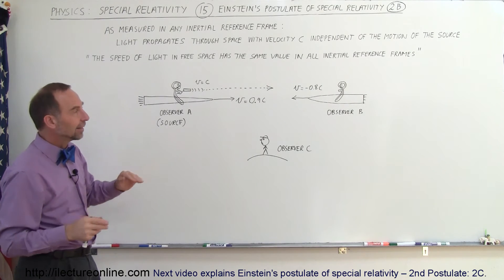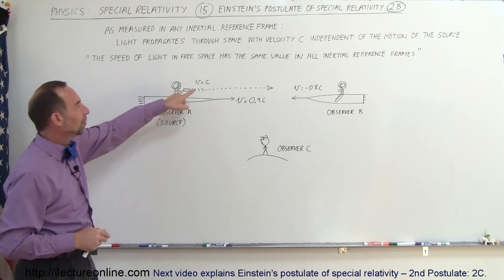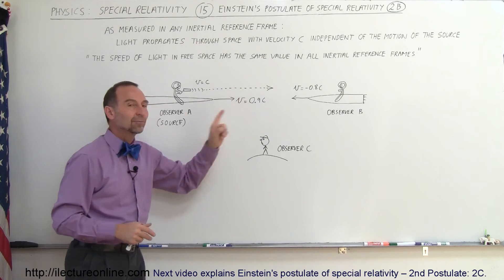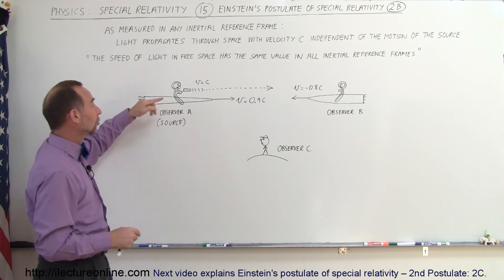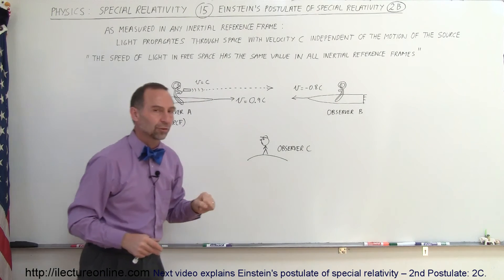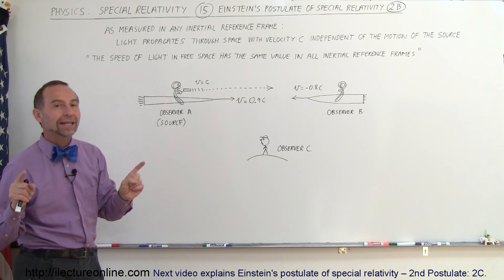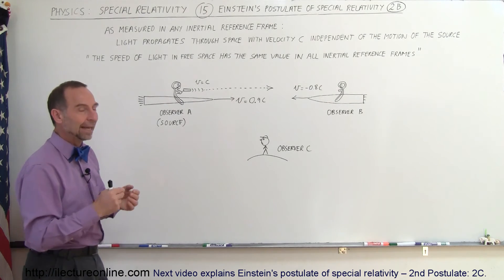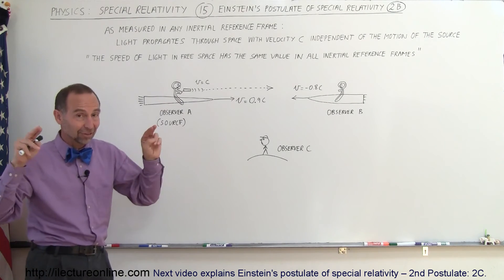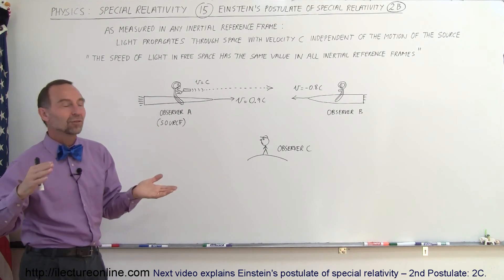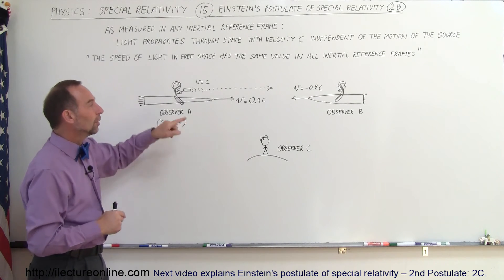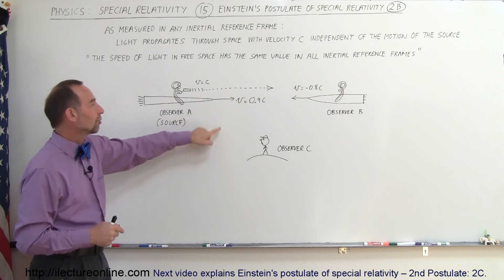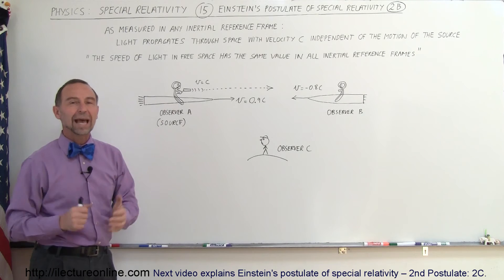Again, Einstein said, whatever is happening, everybody, every observer sees light moving at the speed of light regardless of what the source is doing or regardless of what the observers are doing. As long as the observers are in an inertial reference frame, which means a non-accelerating reference frame. Any reference frame that's standing still or is moving at a constant speed relative to one another, you will see, any observer in those reference frames will see the speed of light moving at the speed of light.